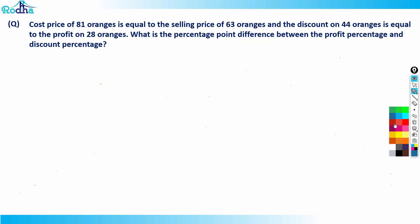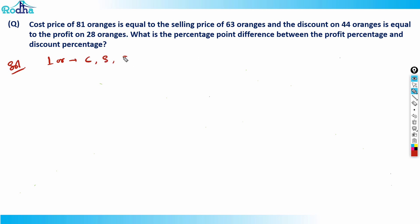Now, I'll assume the cost price of one orange is c rupees. So for one orange: cost price is c, selling price is s, discount is d, and profit is p. The cost price of 81 oranges equals the selling price of 63 oranges, so 81c = 63s. Therefore c/s = 63/81, and cancelling by 9 gives c/s = 7/9.